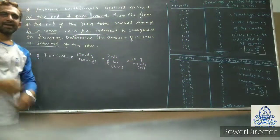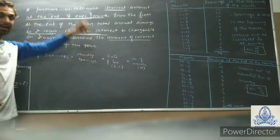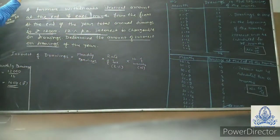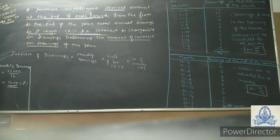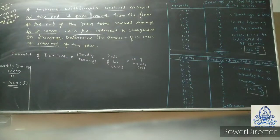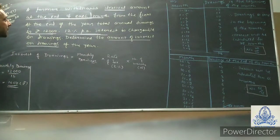Hello friends. I explained everything regarding this chapter in the previous video. Now we are starting small sums of this chapter. The small sums of this chapter are given in the main textbook page number 30. You can see that.